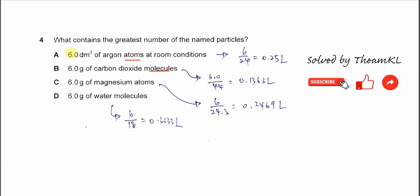For A, 6 dm cubed of argon atoms at room condition. Because it's volume, in order to find the mole, we need to use the molar volume, 24 dm cubed, because it's room condition. So 6 dm cubed over 24 dm cubed, we get 0.25 moles times L. L is the Avogadro constant, so I'll just use this one instead of using the numbers.